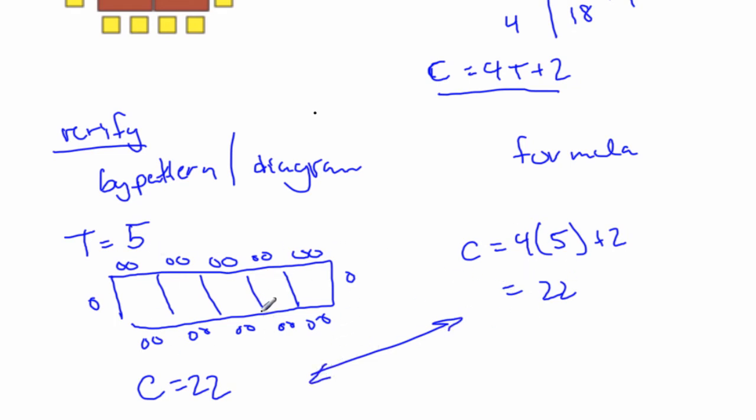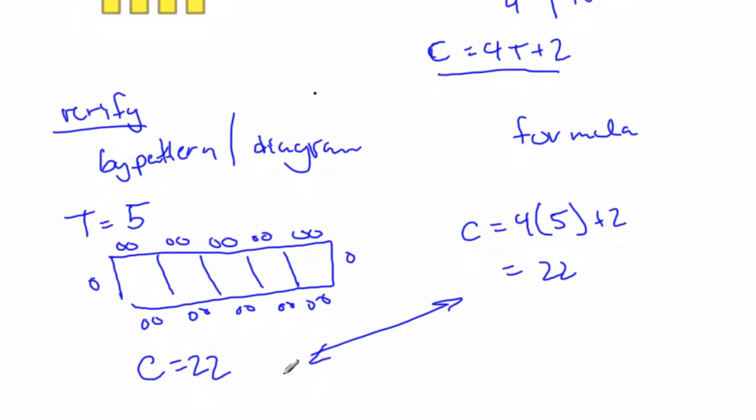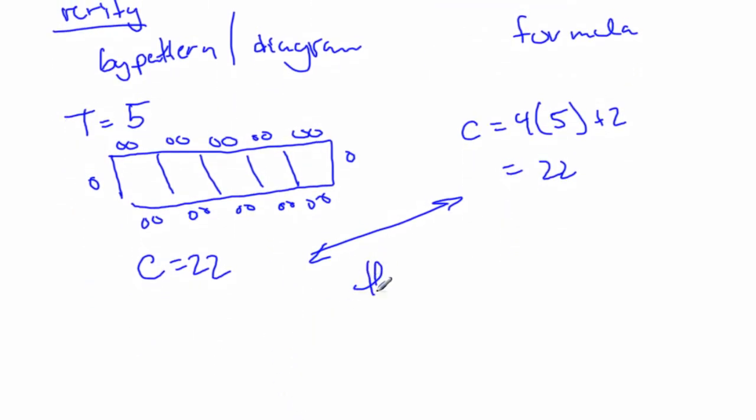We've checked the formula two ways, by the diagram and by formula, we've verified it for t equals 5. Okay, you need to put in there, yes, show these are the same. Yep. These are the same. Okay, so we've verified once. Verified once for t equal to 5.